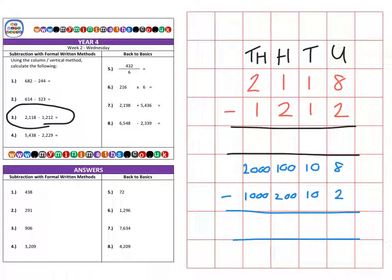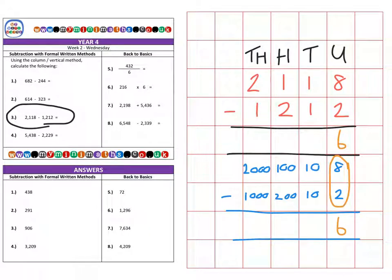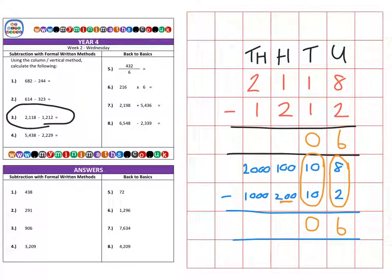Let's have a look at the different values. First of all in the units column there's eight subtract two which gives me six left over. Then there's a ten take away ten which leaves me with nothing. Then onto the hundreds column we have a larger number again — a hundred take away two hundred.